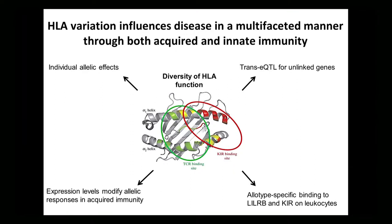But there are other characteristics of the class 1 molecules — and I'm sure this is true for class 2, though we haven't studied that as closely — that really should be considered when you think about the role of variation at class 1 in human disease. One of those is the ability of the peptide binding groove to bind receptors on innate immune cells. These KIR receptors, encoded on chromosome 19, are expressed on innate immune cells such as natural killer cells and certain monocytes and dendritic cells, and their ligands are HLA class 1.